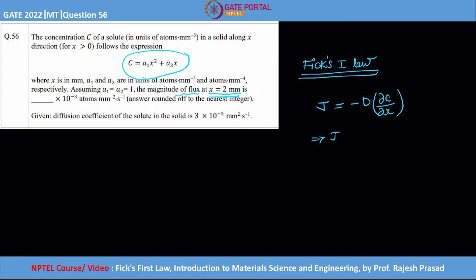Directly you just need to put all the values: -D is how much, it is given as 3 × 10⁻³ into concentration profile the differentiation. So dC/dx will be equal to a₁ × 2x + a₂ × 1, correct. If you differentiate with x that is what you are getting, and of course a₁ and a₂ is equal to 1. So you can directly write this as 2x + 1.